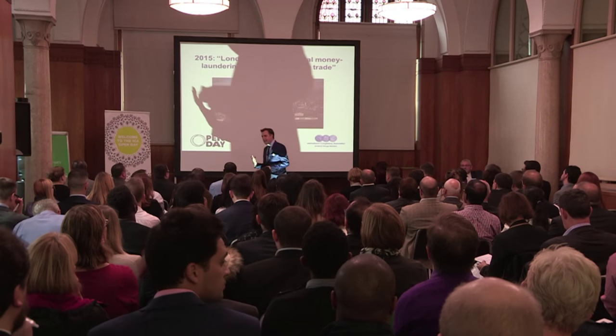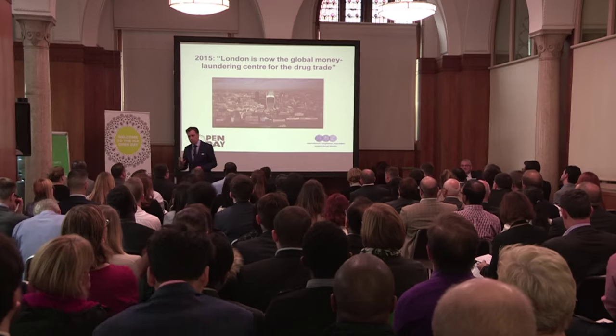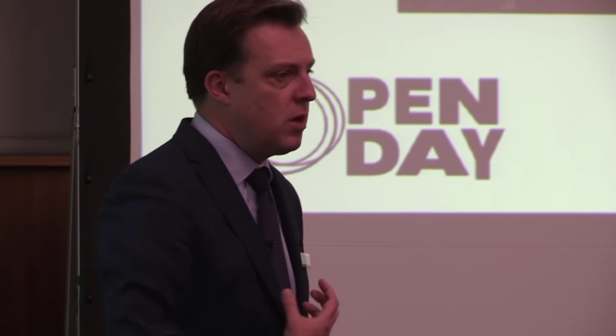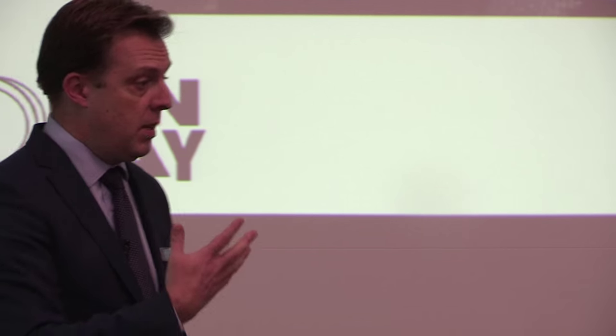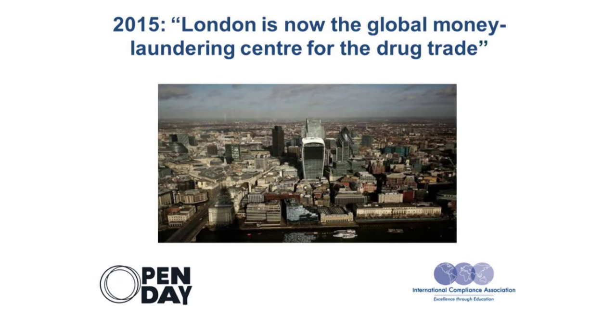We'll be looking on the course at some of the latest thinking about the techniques used. Many of you will have read about the case that the press dubbed the Great British Laundrette — dozens and dozens of front companies being set up in the UK, sham litigation, millions and millions of pounds washing through the City of London, but not just London — Manchester, Birmingham. A lot of it Russian organized crime, corrupt politicians coming through Russia, links to Moldova. On the course, we're going to look at some of those techniques.